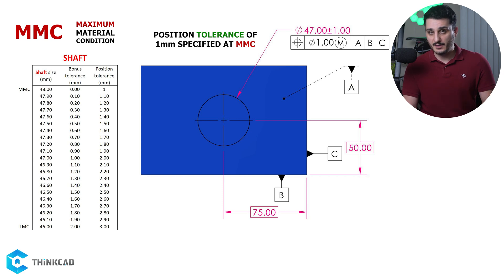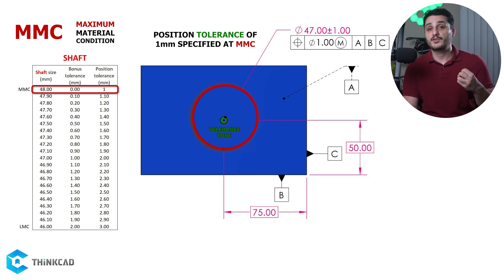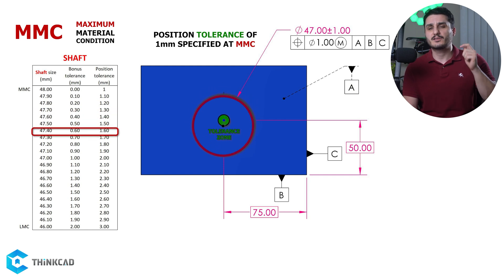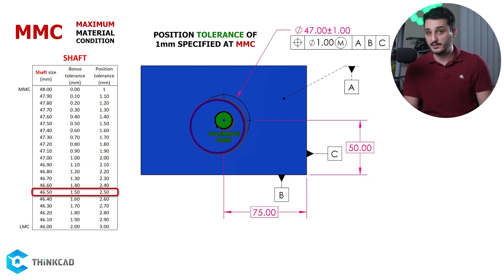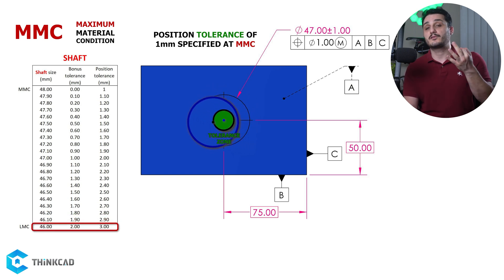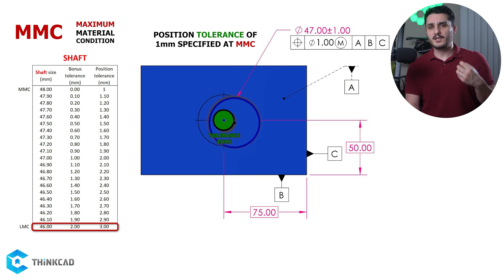Let's look at what this means on our part. Starting with the size at MMC of 48 mm, we get a position tolerance of 1 mm, which is the least amount our feature can be off-center. As we depart from MMC and move towards LMC, our precision tolerance gets larger by the same amount — a smaller feature can be off-center more. When the size is at LMC of 46 mm, we get 3 mm of precision tolerance while still being in spec. A smaller cylinder technically has more room for position error, which makes perfect sense for assemblies.